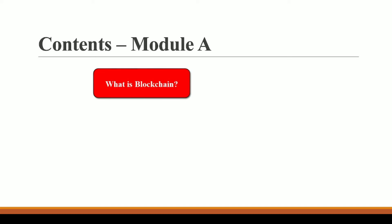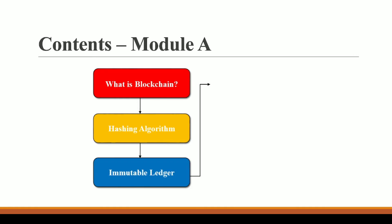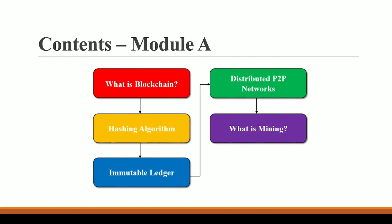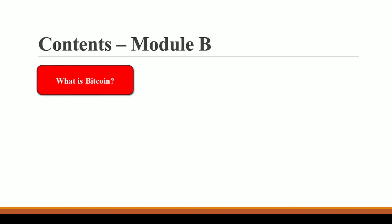In Module A we are going to talk about what is blockchain, then what is a hashing algorithm — one of the most important concepts when starting with blockchain — then what is an immutable ledger, then distributed P2P network, because our whole blockchain network works on a distributed P2P network. We will also cover mining and consensus protocol.